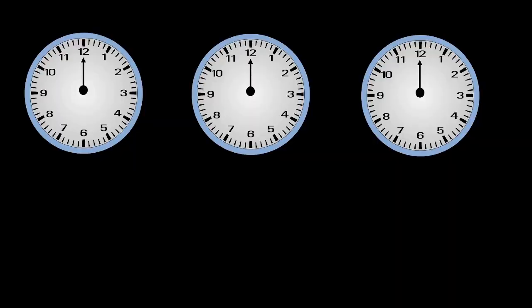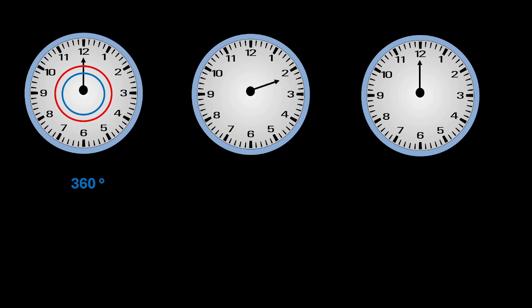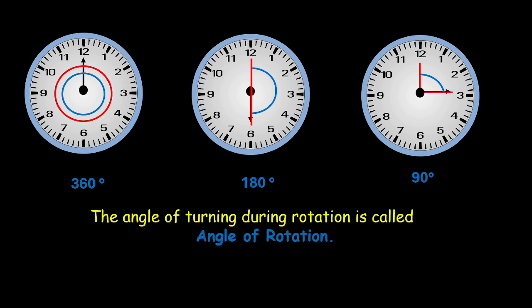Let's observe the hands of a clock. This is the second hand of a clock. While it moves from 12 to 12 to complete one minute, it moves a full circle and covers an angle of 360 degrees. If it moves from 12 to 6, it will cover half a circle — that is, half of 360 degrees, which means an angle of 180 degrees. Similarly, if it moves from 12 to 3, it covers a quarter of a circle, that is, an angle of 90 degrees. This angle of turning during rotation is called the angle of rotation.